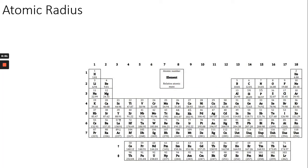The periodic table can tell us a lot about elements and how they react. One of the things the periodic table tells us is about the atomic radius. Atomic radius is simply the size of the atom.